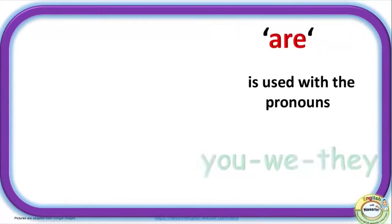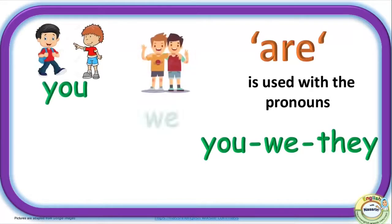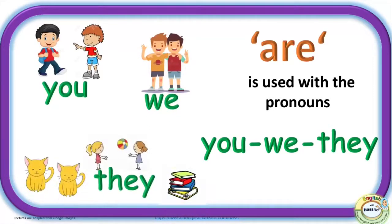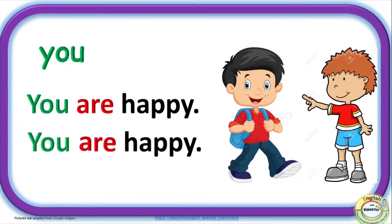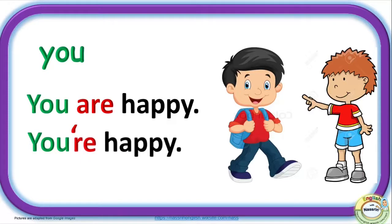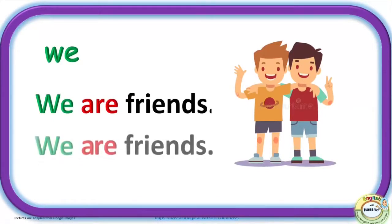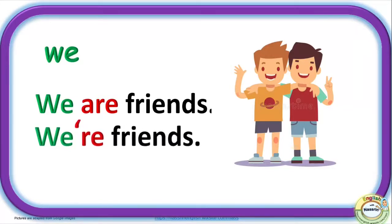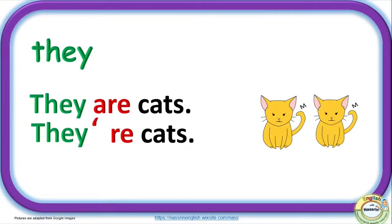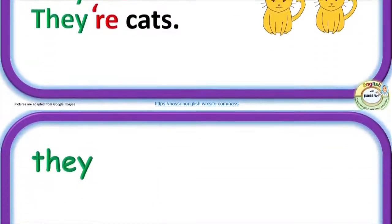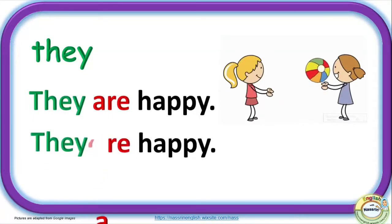Are. Are is used with the pronouns you, we, they. You are happy, and the short form is you're happy. We are friends, and the short form is we're friends. They are cats, and the short form is they're cats. They are happy, and the short form is they're happy.